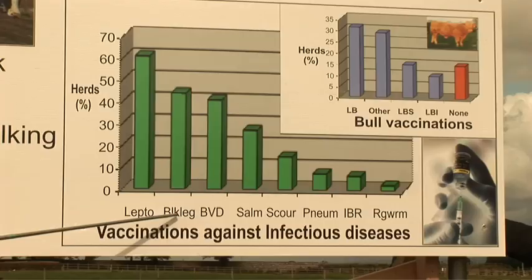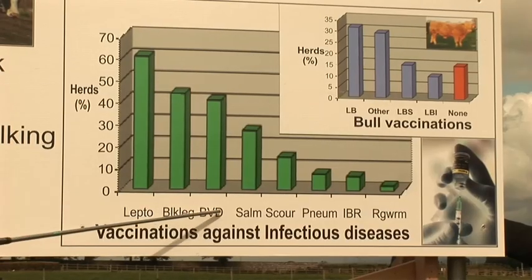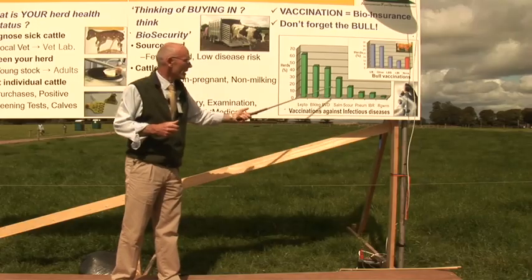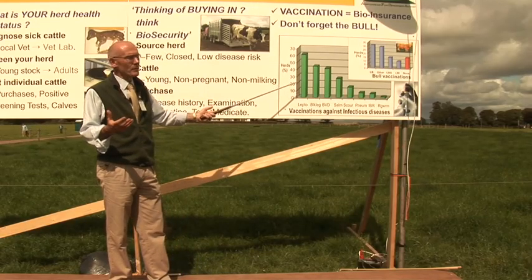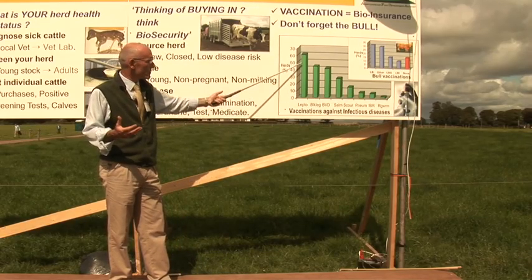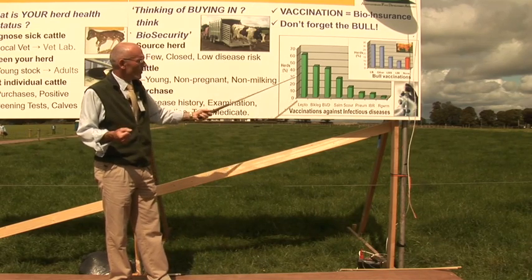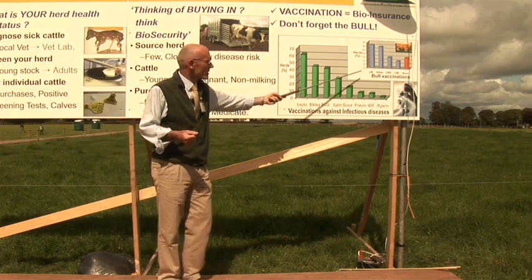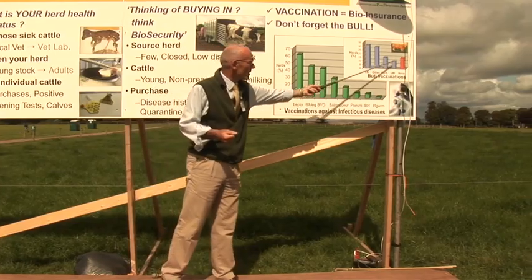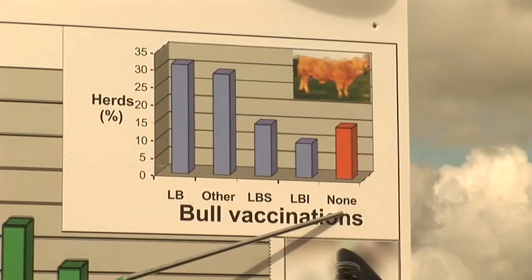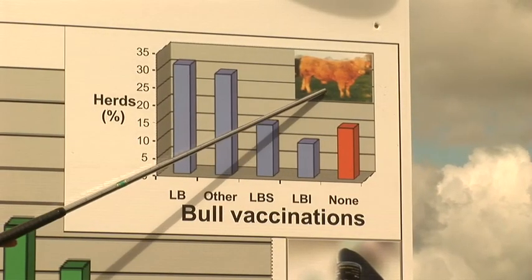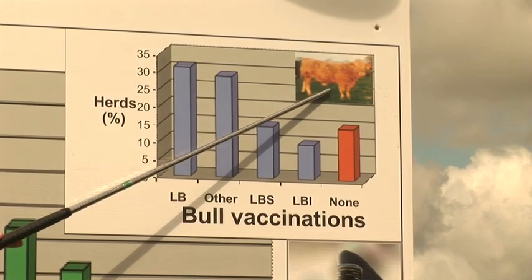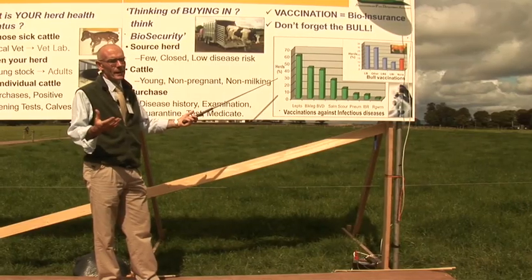The other diseases — blackleg, BVD, salmonella, diarrhea, pneumonia — are used to varying degrees on farms but not as much as leptospirosis. One factor found in recent surveys is that in some cases the bull is not vaccinated. The bull is a critical part of your fertility planning and should always be vaccinated the same as the cows that he mixes with.